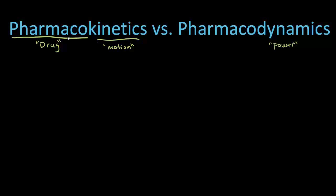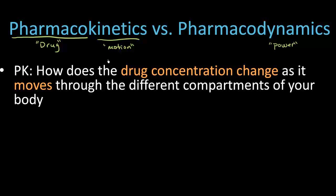So when I think of pharmacokinetics, I'm thinking of a drug and I'm thinking of that drug moving through our body. So what happens as a drug moves through our body? Well, the concentration changes. And that's really what pharmacokinetics — PK — is looking at. It's really answering the question of how does the drug concentration change as it moves through the different compartments of your body. That is pharmacokinetics.